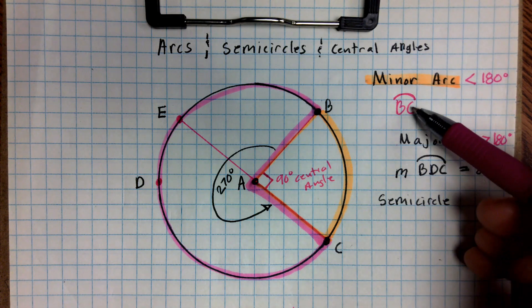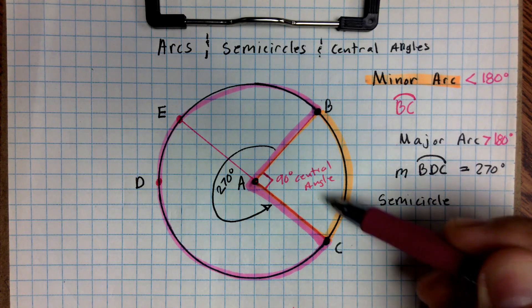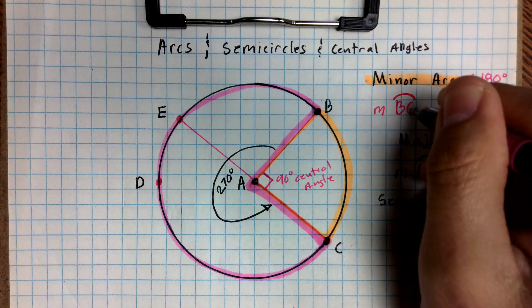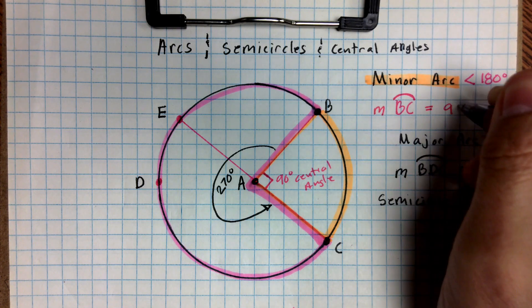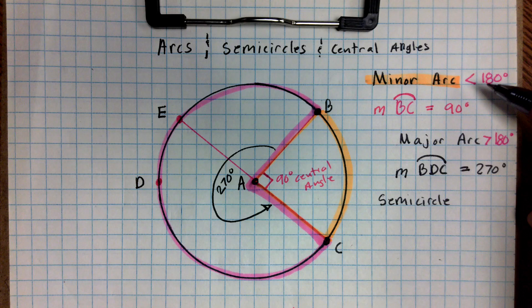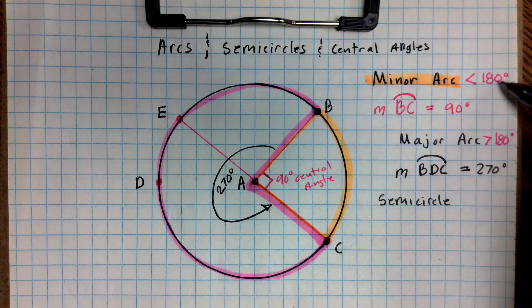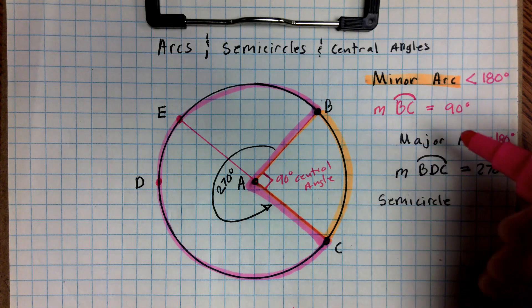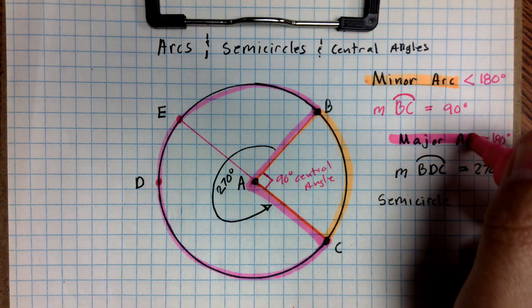On the previous one that we had done, BC, its angle was 90 degrees. So we could say the measure of BC is equal to 90 degrees. So notice it was a minor arc because it was less than 180 degrees. So I'm going to go ahead and highlight my major arc in pink.